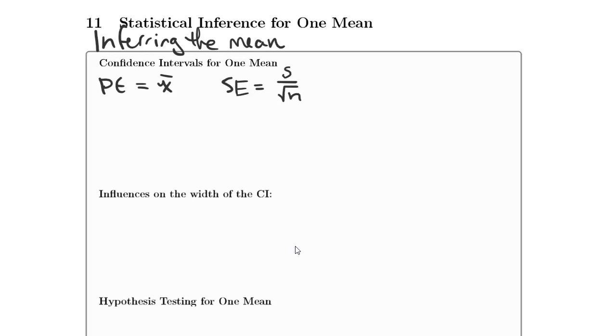The multiplier is going to be this number t-star, which is equal to the inverse t function of 1 minus alpha over 2. Again alpha is the error. And then a second parameter called the degrees of freedom. So df is degrees of freedom and it is going to be equal to n minus 1.